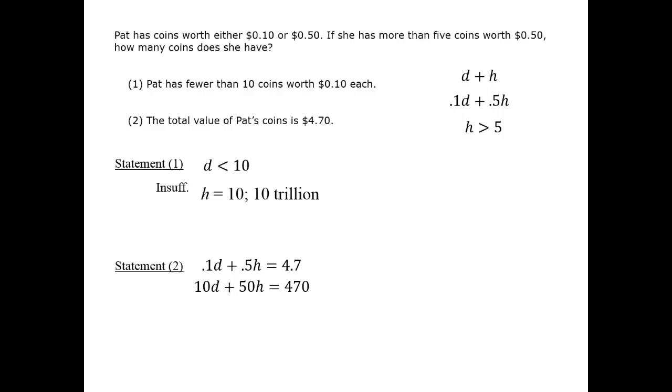Analyzing by cases, we see if H equals 6, for example, then $3 comes from the half dollars and the rest from dimes. But the data permit the case also that H equals 9. And in that case, $4.50 comes from the half dollars, with only two dimes filling the gap. In these two valid cases, we get different answers to the question. So we have insufficient information from this statement to answer the question definitively.